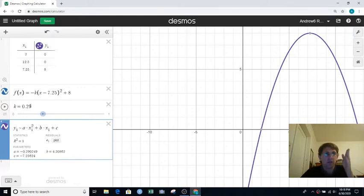We already have the negative here. So 0.29 here, 0.290249. Close enough.